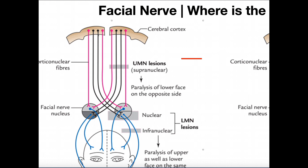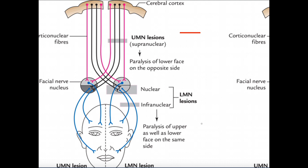Now if we look at the black cell bodies of upper motor neurons and follow them down, they cross over and innervate these lower motor neurons. One of those goes to the forehead, and in the other case it goes down to the lower two-thirds of the face.